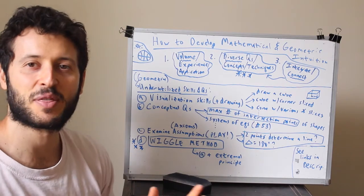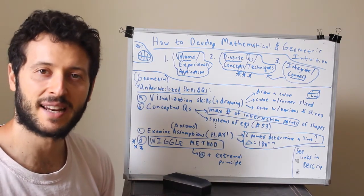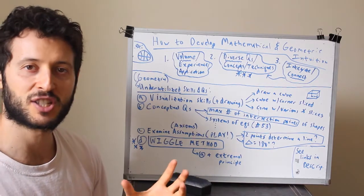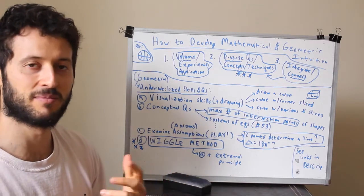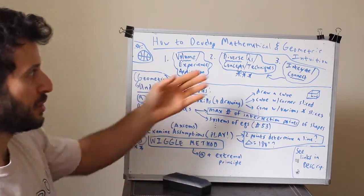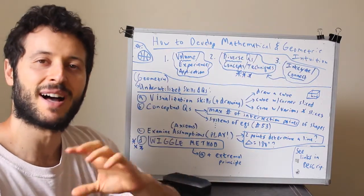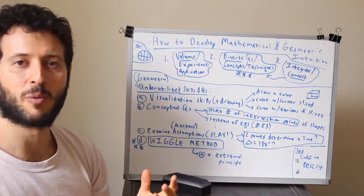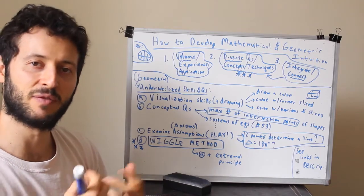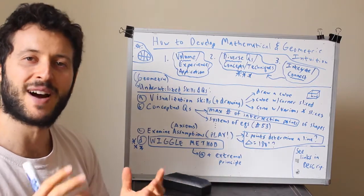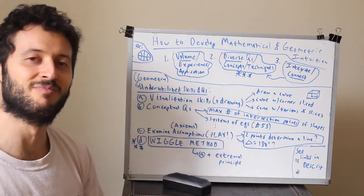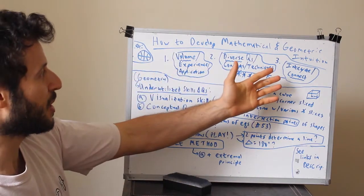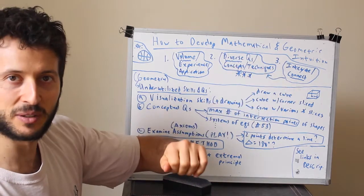There's kind of a three-step way we can look at it. Before we dive into that, this is not going to be the most exhaustive list of everything we could possibly do to develop our intuition. I'm going to present what I think is a good way that hits a lot of useful things. Here's a three-step process that I think will help develop mathematical intuition.